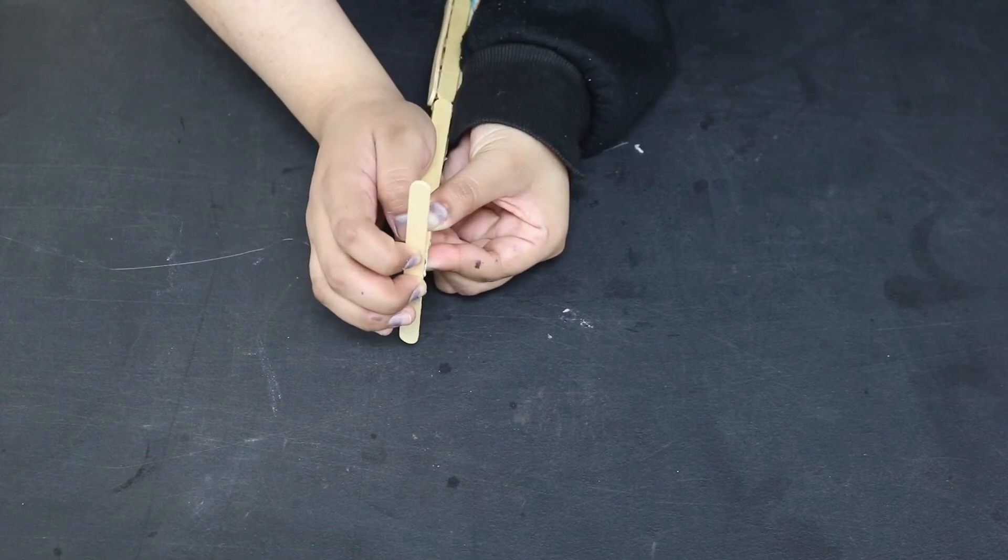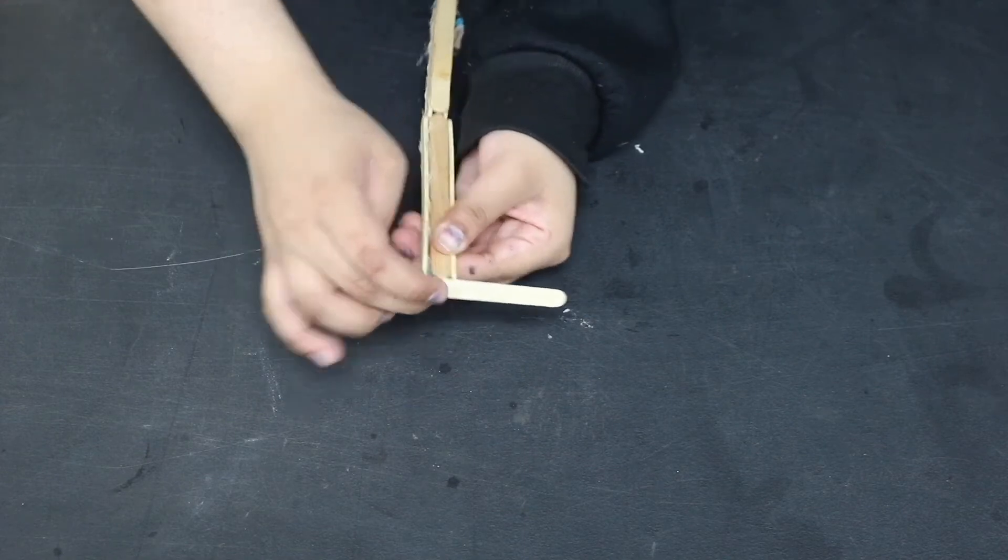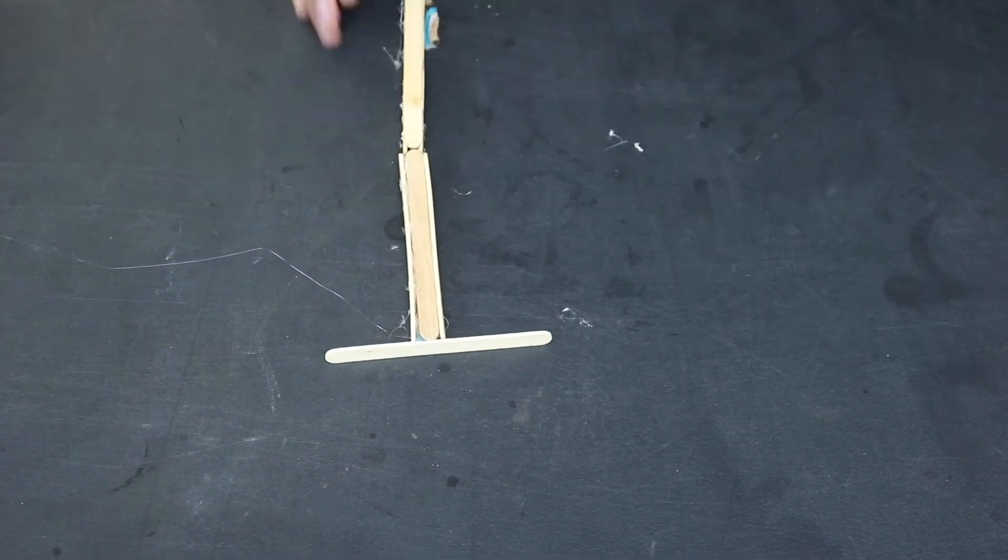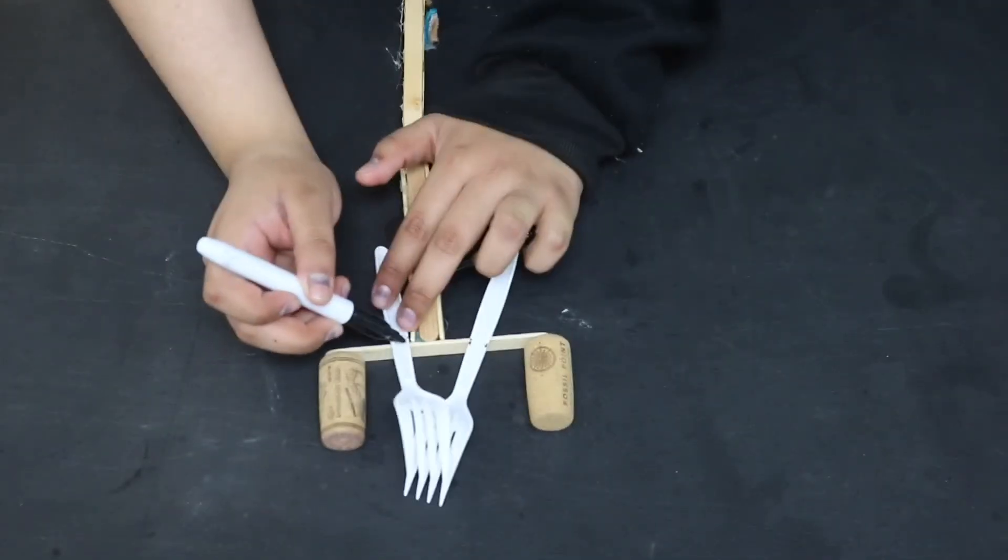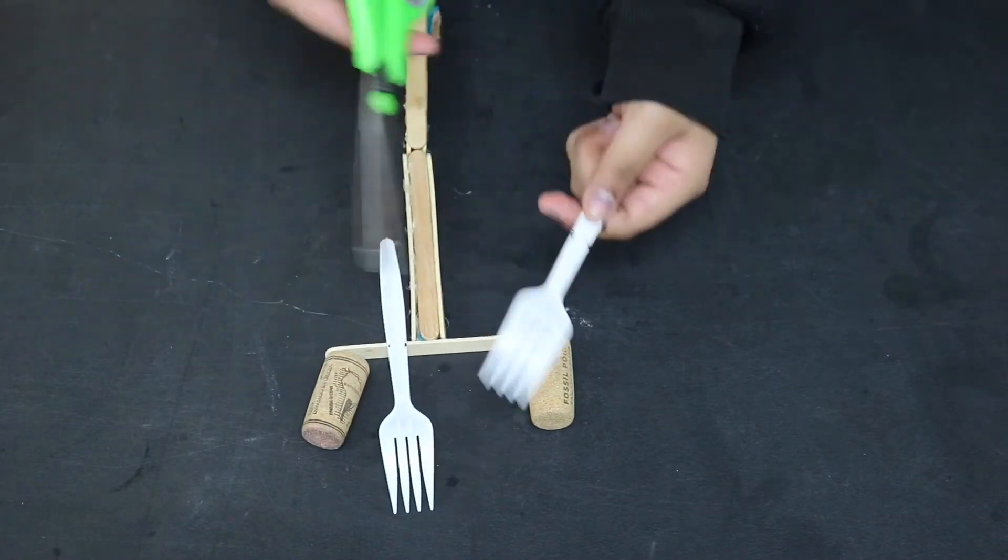This is where I will build my backscratcher part. On top of that popsicle stick, I am going to be adding two corks on the sides of the popsicle sticks and then I will be cutting two forks in half.